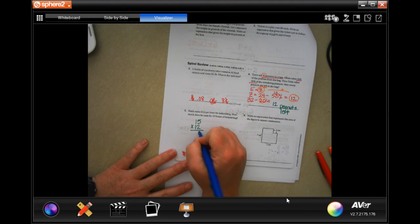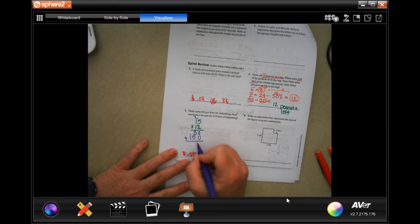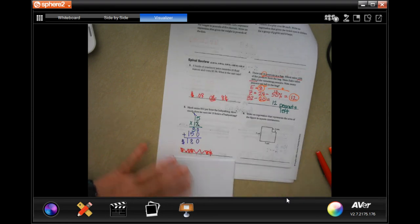Two times five is 10. Carry that one. Two times one is two. Plus one is three. And go through and tip, tack, toe. And one times 15 is going to be 15. Add those together. Zero, eight, one. $180, guys.